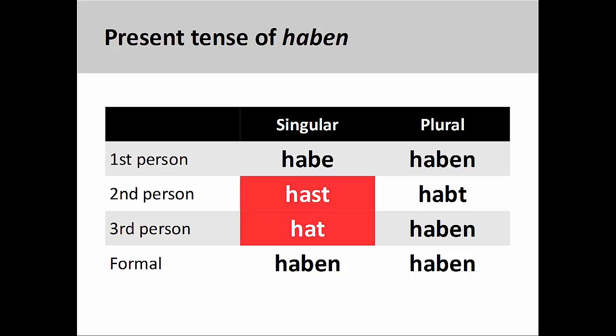You will recall from an earlier presentation that some irregular and strong verbs have unusual second- and third-person singular forms in the present tense. One verb we looked at was haben, meaning 'to have,' which retains the consonant letter b throughout most of the present tense conjugation pattern. This letter is dropped, however, in the second- and third-person singular. You may want to review that presentation before continuing with this one.